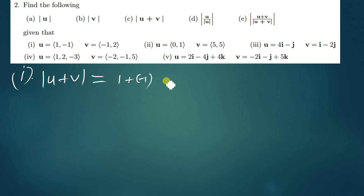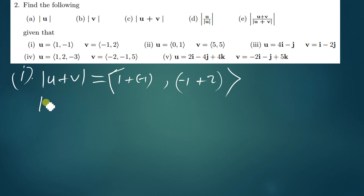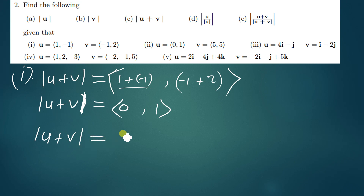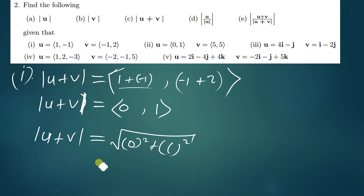So we get [0, 1] as the resultant vector. Now we find the magnitude of this vector. The magnitude will be the square root of 0 squared plus 1 squared, which gives us the square root of 1, which equals 1. So the magnitude of U plus V is simply 1.